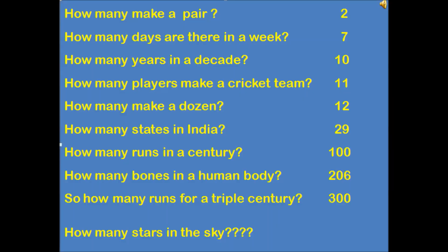Let us answer a few questions. How many make a pair? 2. How many days are there in a week? 7. How many years in a decade? 10. How many players make a cricket team? 11. How many make a dozen? 12. How many states in India? Presently 29. How many runs in a century? 100. How many bones in a human body? 206. How many runs for a triple century? 300. And how many stars are there in the sky? Well, I have never been able to count. There are infinite number of stars in the sky.